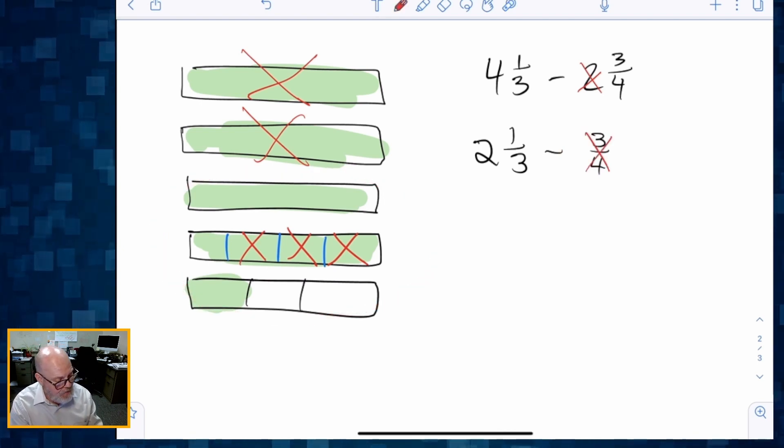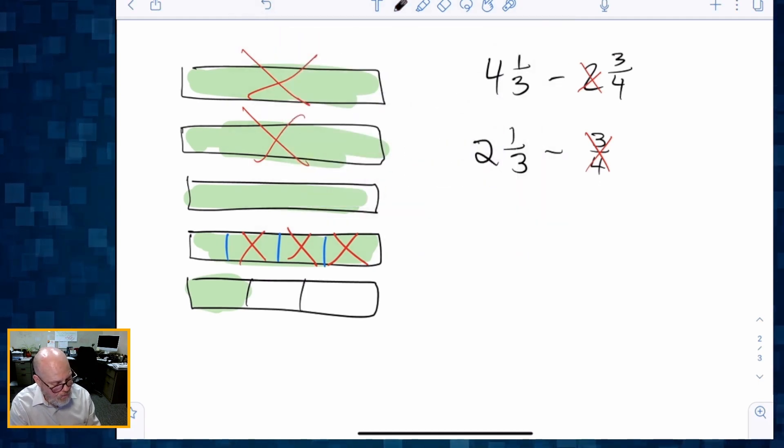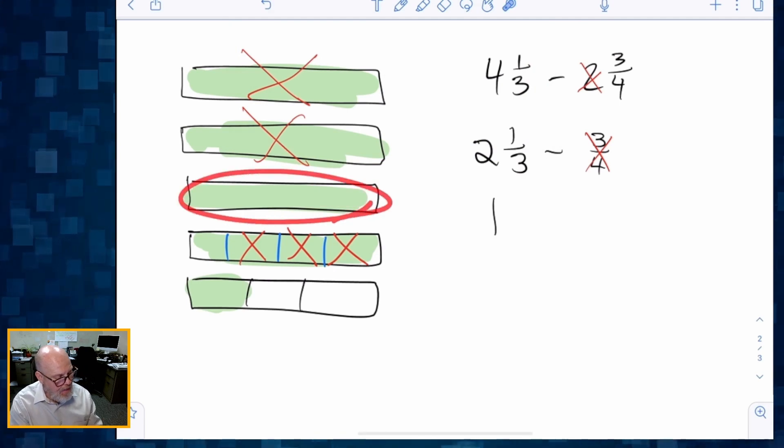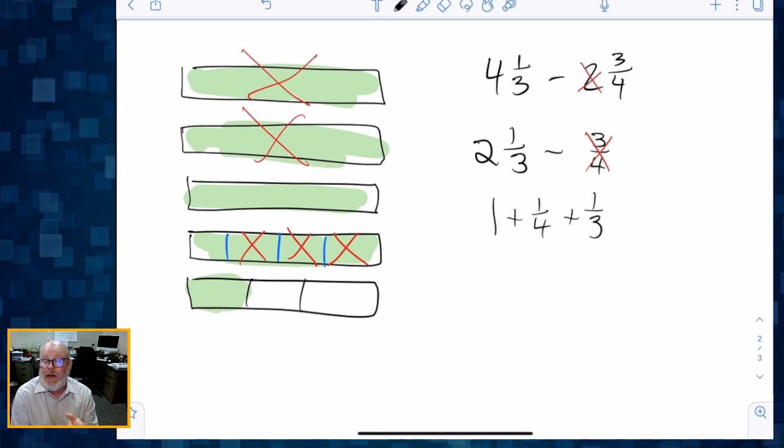What do we have left? We have, let's see, we have one hole. And that's right here. And then we have a fourth and a third left over: 1 + ¼ + ⅓. And that's going to be our final answer.